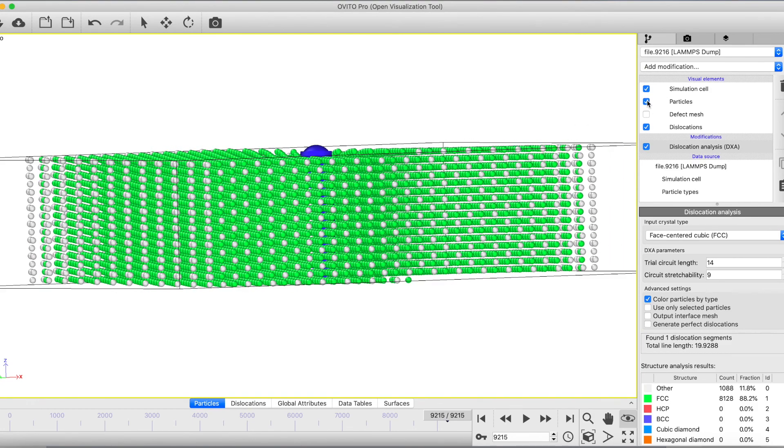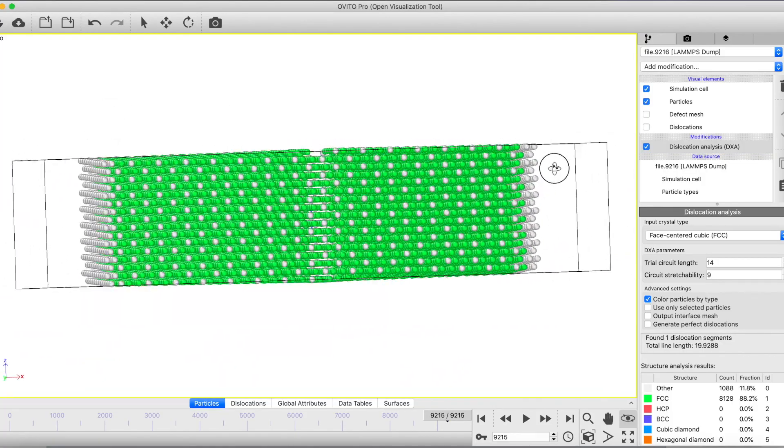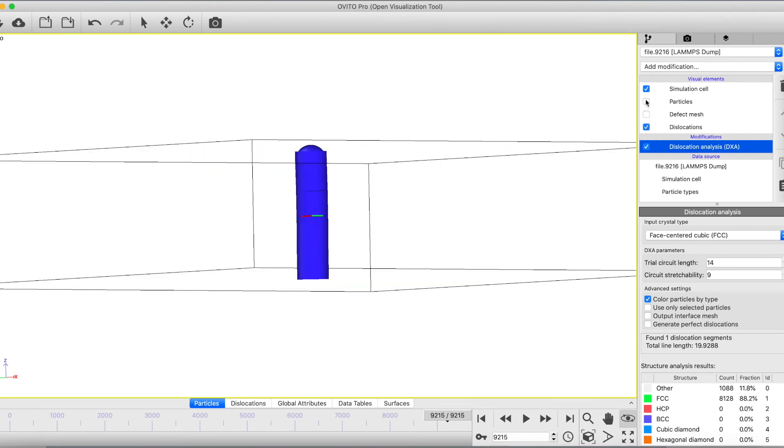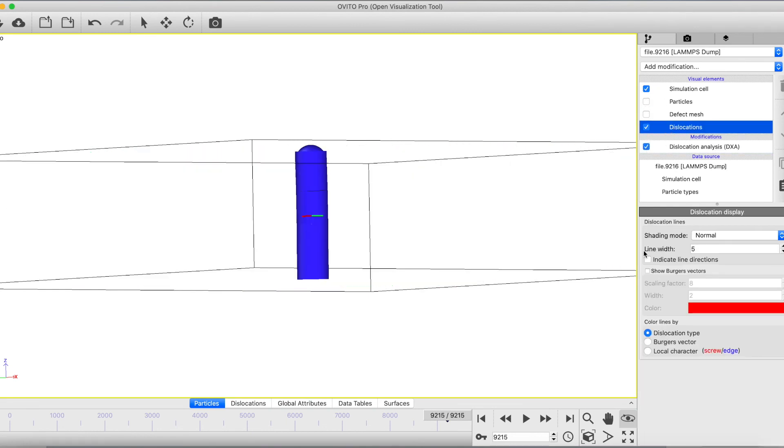If you check this in OVITO and you do DXA after putting the dump files, this is how it looks - this is a perfect screw. Now I remove the DXA and you can see it as displaced like a screw. Now if I remove the particles, go to dislocations and press show the direction, it's in the z direction. I press local character - it's completely perfectly screw.